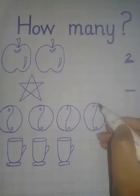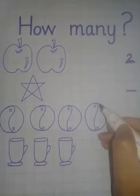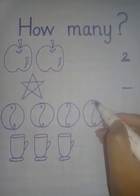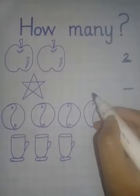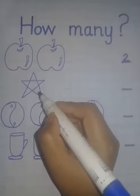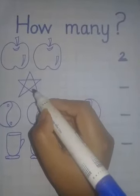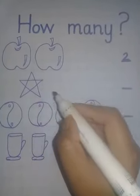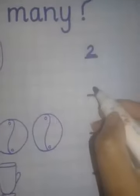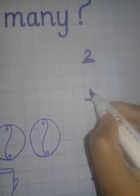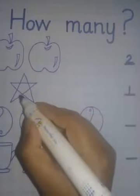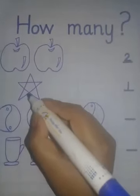Next picture is the star. Count with me. How many stars are here? One. How many stars? One. So I will write one in front of one star.